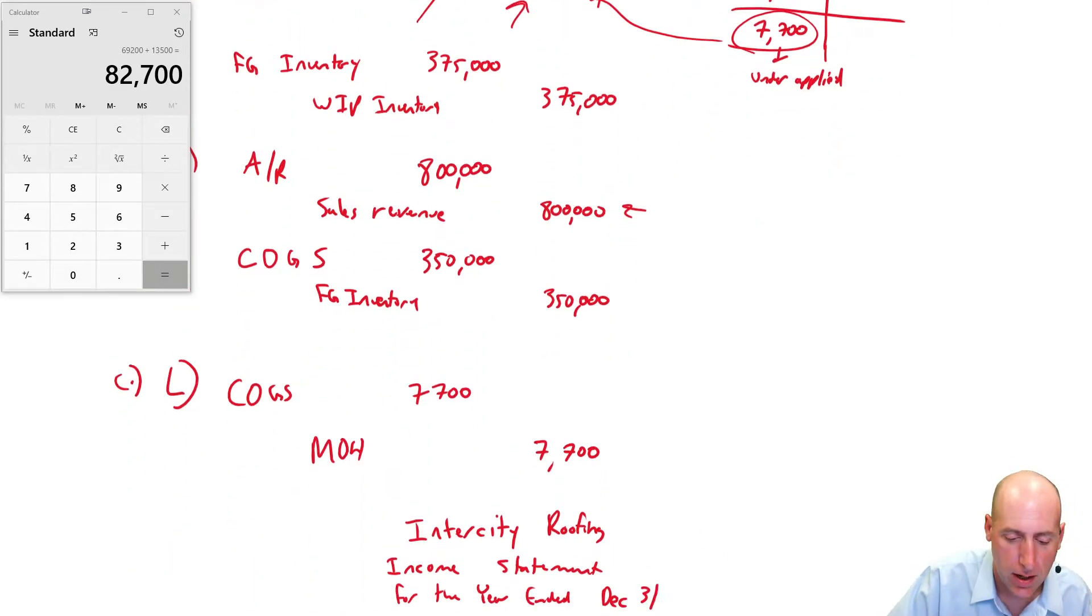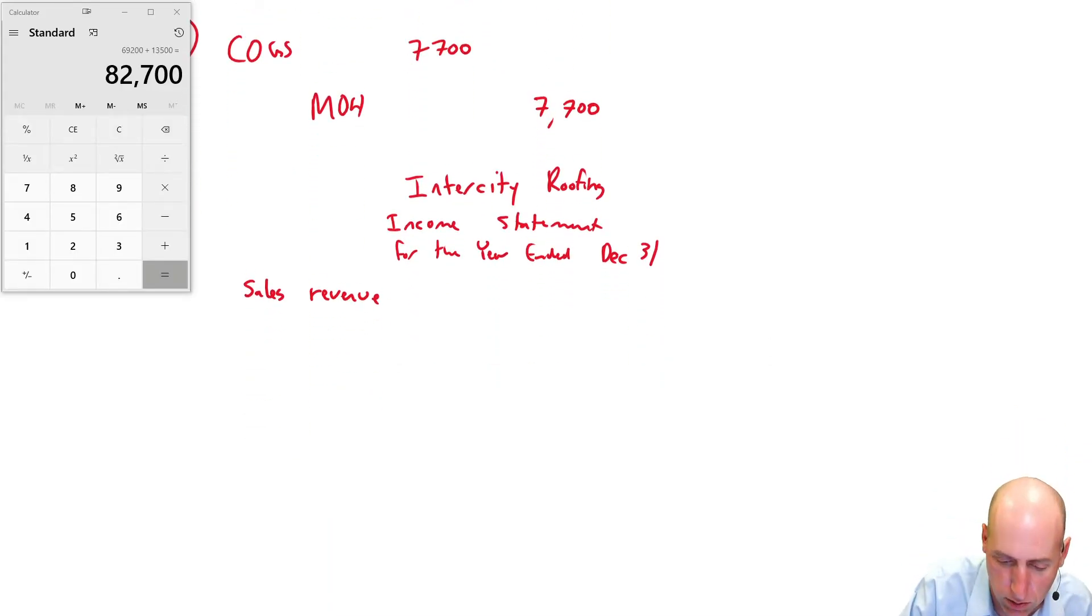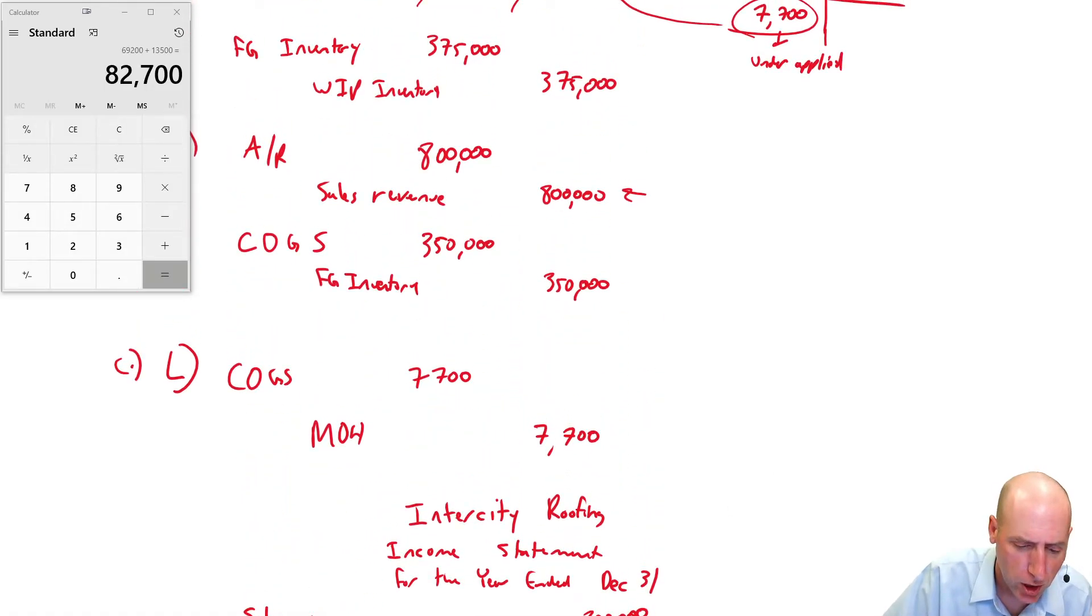That's good enough, too. So remember what an income statement looks like. Top line is our revenue, and we had one revenue in this company. We had sales revenue. And just scrolling up, I can see the sales revenue happens right here. It was $800,000. We made $800,000 worth of sales. That's what's shown in our entries.